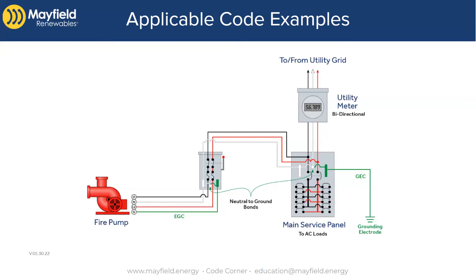Let's talk about the equipment grounding conductor — the green wire — going to the fire pump, which is absolutely necessary. But it kind of dead-ends; it doesn't continue on to a grounding electrode or back to the main service panel. Should people be doing that? I've seen AHJs adamant about it in both cases — some saying the green wire must run all the way back, others saying absolutely not. It seems to be a big sticking point.